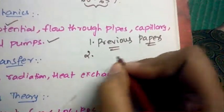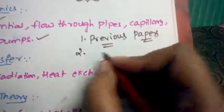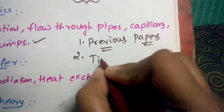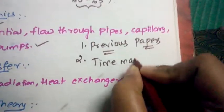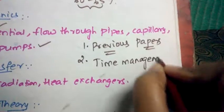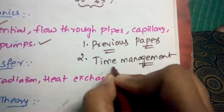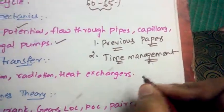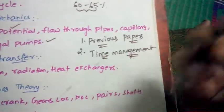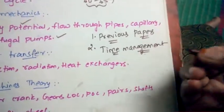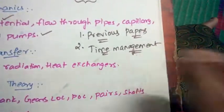Second one is time management is very important, because most of the people will be messed up in the last moment so that they cannot even be able to solve the easy questions because they are running out of time. So time management is very important.